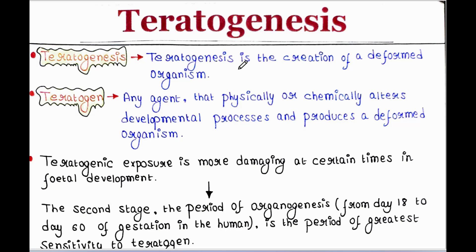Teratogenesis is the creation of a deformed organism. A teratogen is any agent that physically or chemically alters the developmental process and produces a deformed organism.